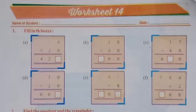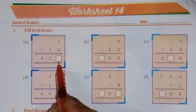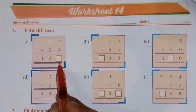This is Varkook of class 4th for Mathematics and today we are going to solve worksheet 14. The very first question is given: fill in the boxes. You can see that there is given multiplication. We have to multiply and then fill the missing number in this box.